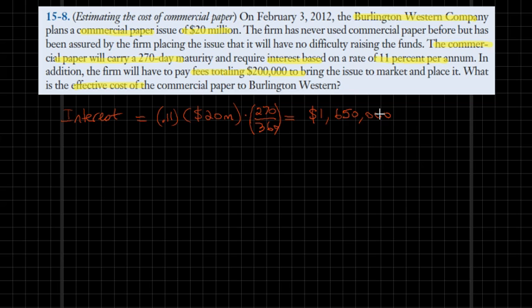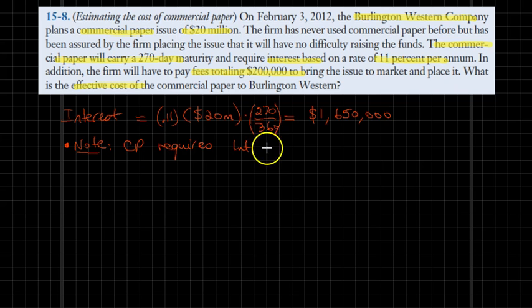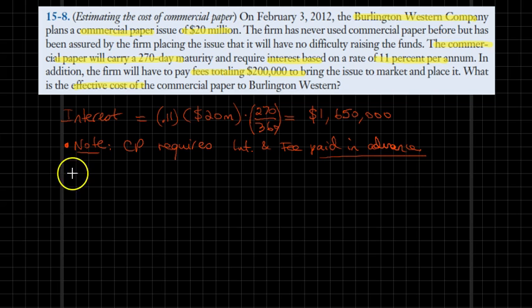Recall that in the case of commercial paper, both the interest and the fees are required to be paid in advance — or prepaid. Having said that, we can now go ahead and figure the effective cost, the APR, of this commercial paper issue.